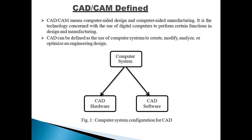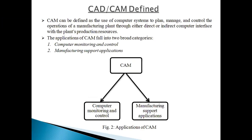In hardware there is the screen, keyboard, mouse, and CPU — these are the hardware parts used for CAD. The software part includes Windows, Adobe Reader, and you can also use CATIA for CAD. So the computer system is mainly divided into two parts: hardware and software.